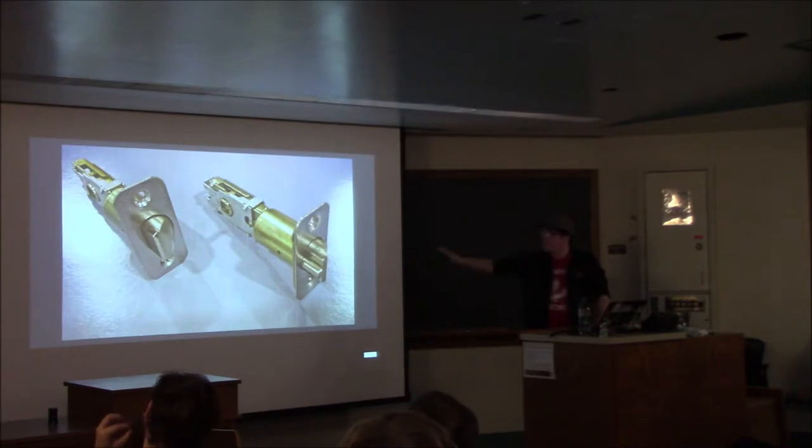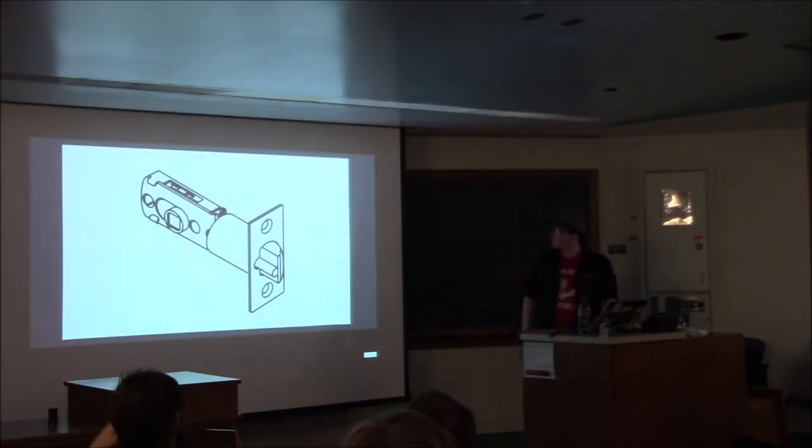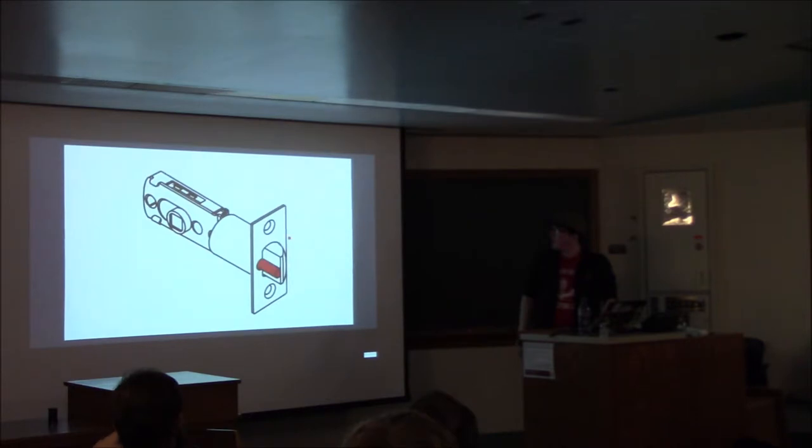We're just going to jump straight into something else that's related to locks because transitions are hard. These are the latches that hold doors shut. You'll notice that there's a difference between these two. This one is flat right here. This one has this little D-shaped nub coming out right there. You've probably seen those on a door. Come on, slides. There we go. This highlighted bit right here is referred to as a dead latch.